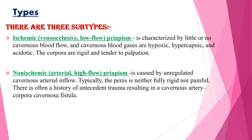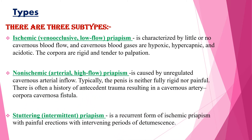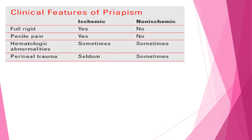In non-ischemic Priapism there is often a history of antecedent trauma resulting in a cavernous artery-corpora cavernosa fistula. The third type is stuttering or intermittent Priapism, which is a recurrent form of ischemic Priapism with painful erections and intermittent periods of attack. Notably, stuttering Priapism is considered a subtype of ischemic Priapism and is intermittent in nature.